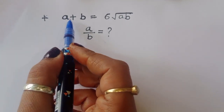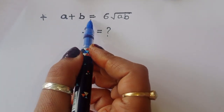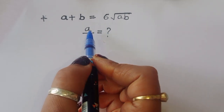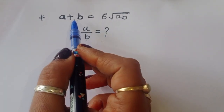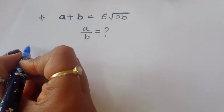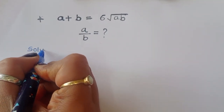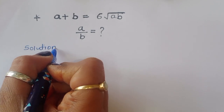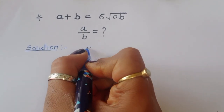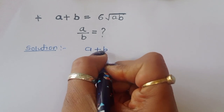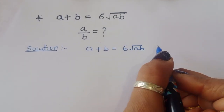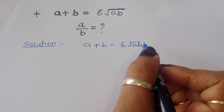The question is: given a plus b is equal to 6 root of ab, we have to find out the value of a upon b. Let's see the solution. a plus b is equal to 6 root of ab — this is the question.